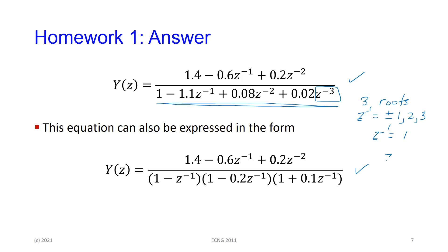You could also express that factor as one minus Z to the minus one equal to zero. When you're trying to find the inverse transforms, you have to get it in this form because this is how the tables are written. If you want to factorize, it's okay to leave it in the form with positive indices, but notice the order — starting with a constant and going down with increasing negative powers. This is the standard form for transfer functions.